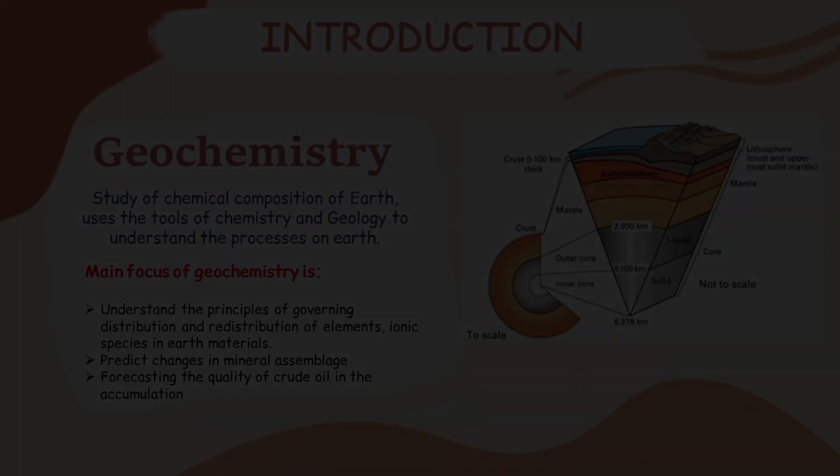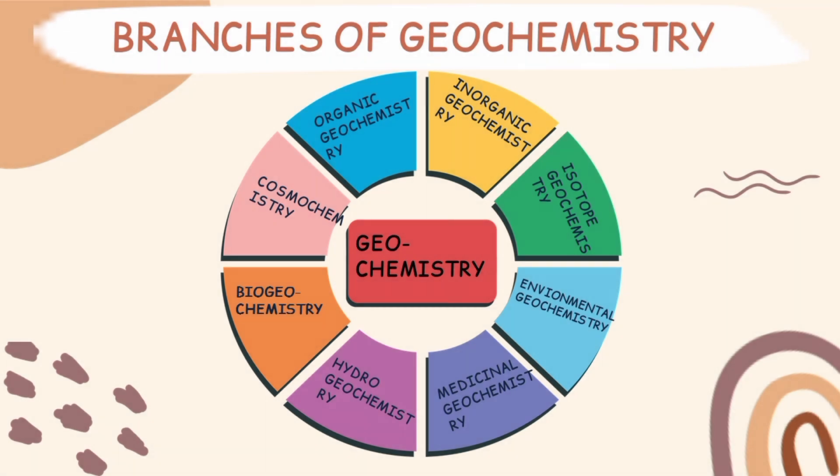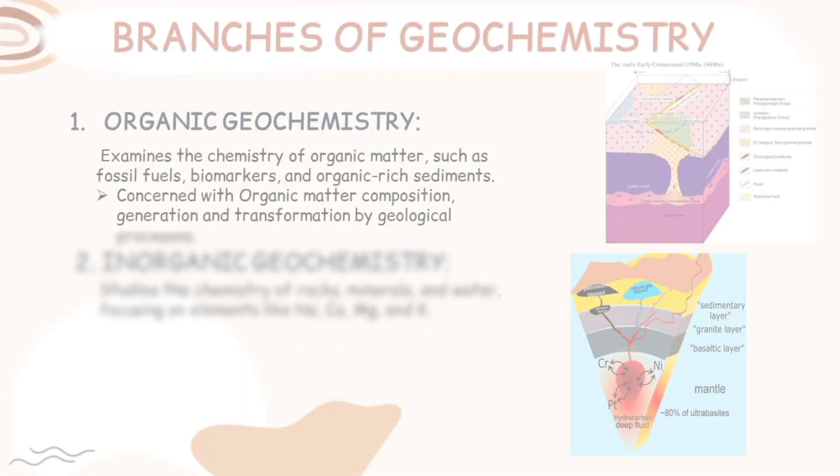Geochemistry is a broader field, much like chemistry as a whole, because it has different kinds of sub-branches and subtypes. Geochemistry has mainly eight branches which are studied around the world, and chemistry plays a vital role in geochemistry, being directly related to it.